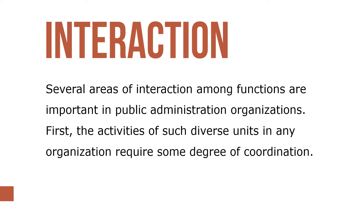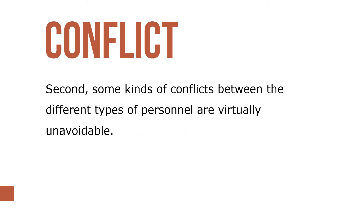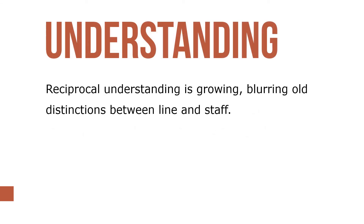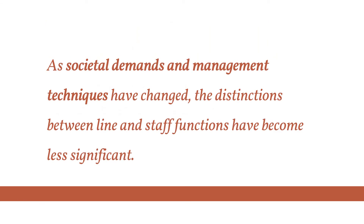First, the activities of such diverse units in any organization require some degree of coordination. Second, some kinds of conflicts between different types of personnel are virtually unavoidable. Finally, these traditional distinctions are increasingly seen as less important in an era of rapid change inside and outside of organizations. Reciprocal understanding is growing, blurring old distinctions between line and staff. As societal demands and management techniques have changed, the distinctions between line and staff functions have become increasingly less significant.